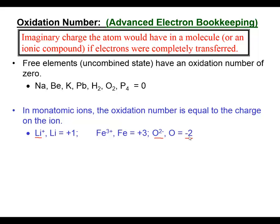Now let's learn some rules for different elements in different circumstances. Let's consider oxygen. If I have elemental oxygen, we have an oxidation number of zero. If we have the oxide anion, we have an oxidation number of negative two.